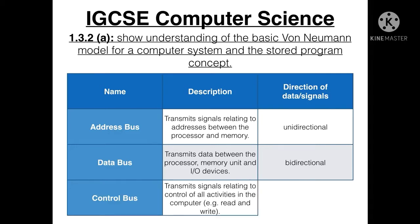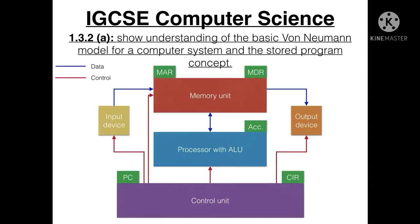The control bus transmits signals relating to the control of all activities in the computer, such as read and write operations, which we'll look at later in this video. The control bus is considered both unidirectional and bidirectional because of the internal connections in the CPU.